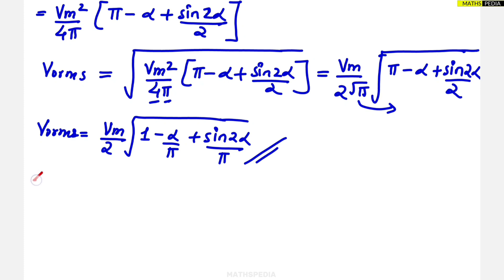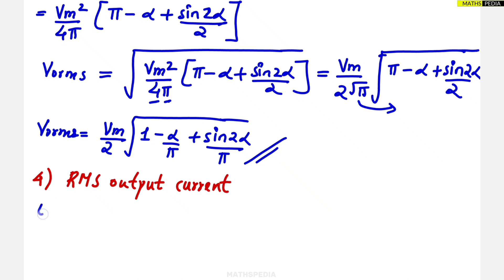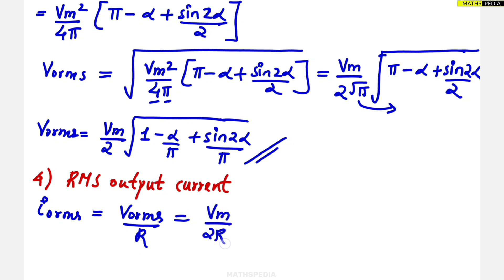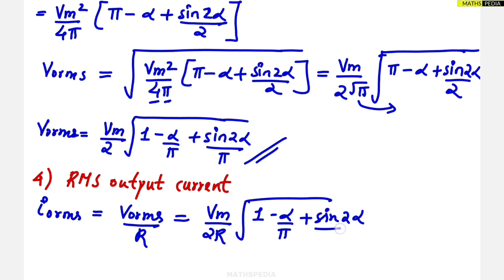The fourth and final thing is the RMS output current. Simple: Iout(rms) = Vout(rms) / R = Vm / (2R) × √(1 − α/π + sin(2α) / (2π)). This will be the final expression.